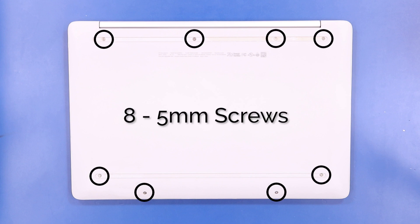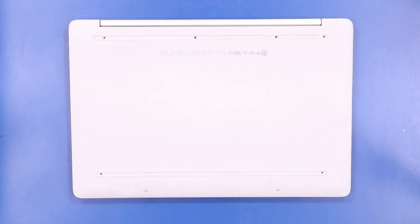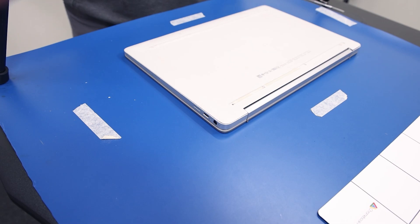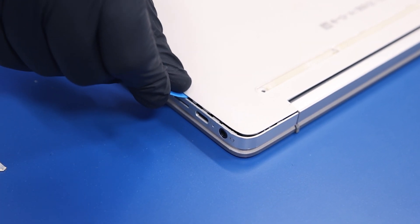Remove eight 5 millimeter screws from the bottom cover. Gently insert the opener pick between the palm rest and the bottom cover, and slide along the edges to pop the bottom cover free.